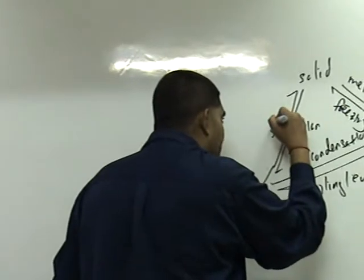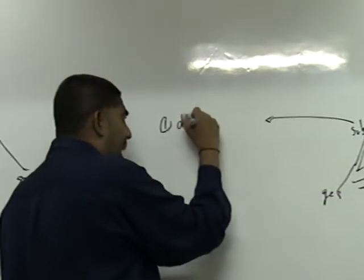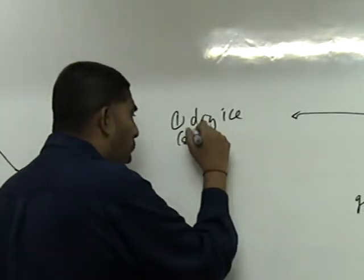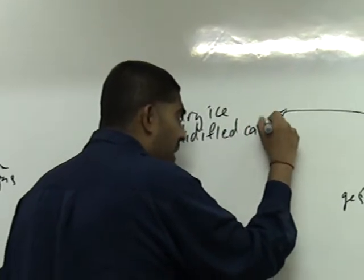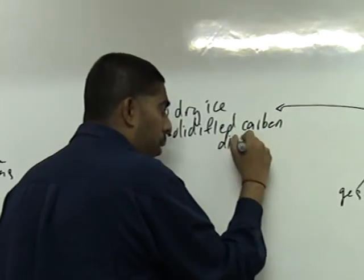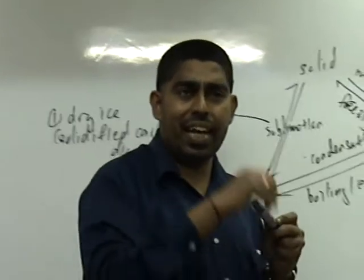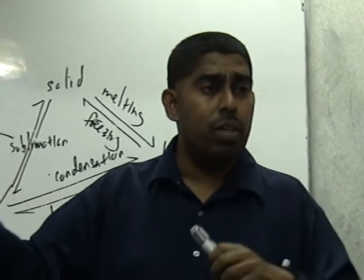Number one, example of substances that sublimate will be dry ice. What is dry ice? Solidified carbon dioxide. Dalam bahasa Melayu, kita panggil apa? Ais krim.